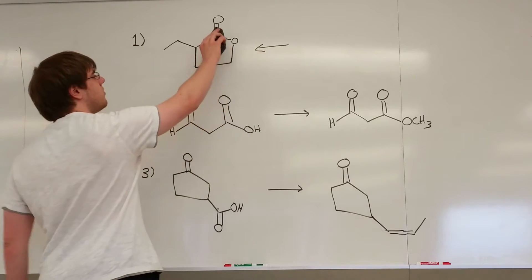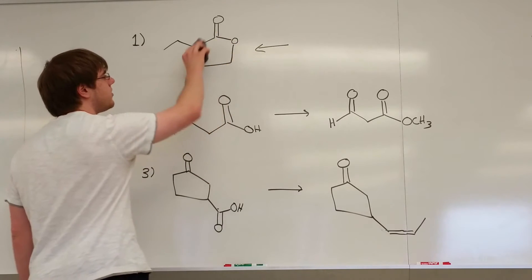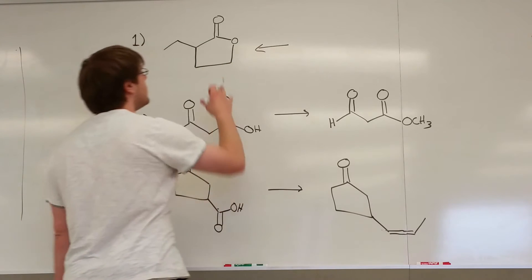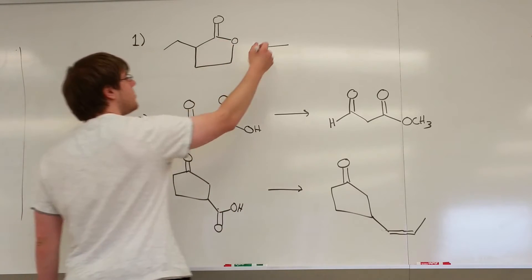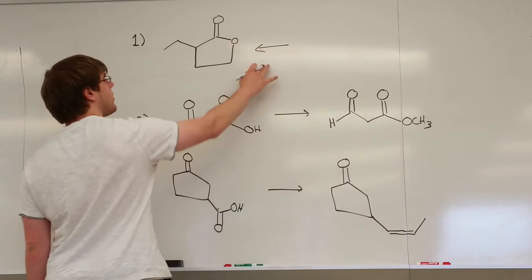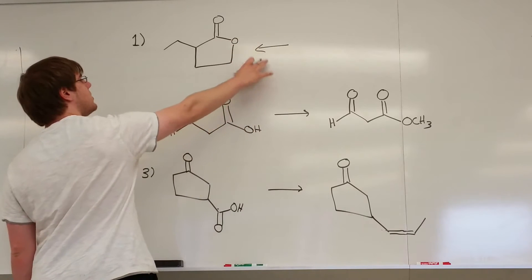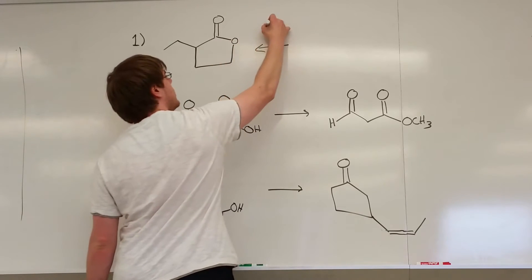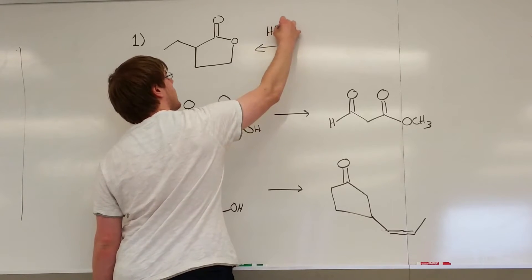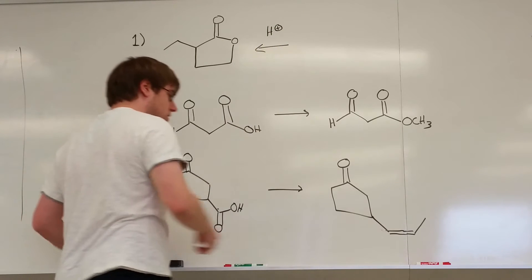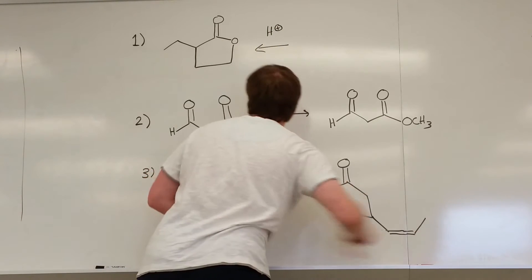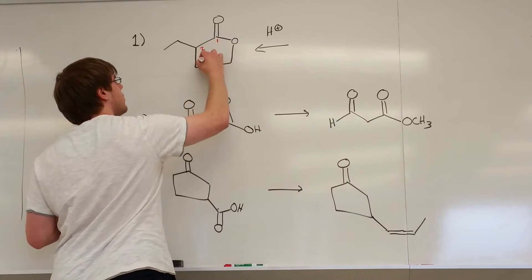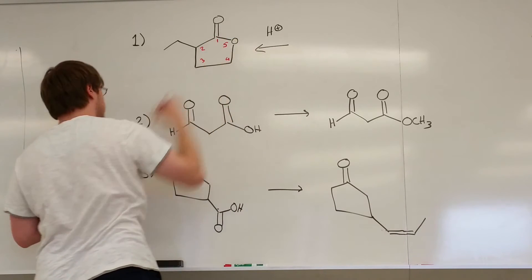First things first, you can't really synthesize a ring like this so you've got to break it apart into its chain form. We saw before that if I want to form the ring — if I want the ring to be at the end of my arrow — I need H+ over that arrow. Now I'm going to number my carbons and oxygen as part of the ring: one, two, three, four, and the oxygen is fine.